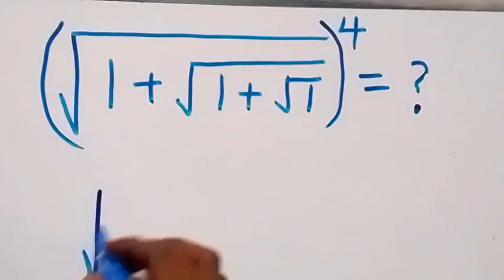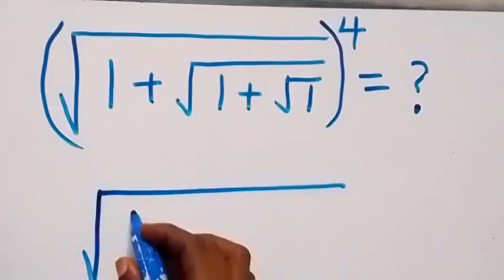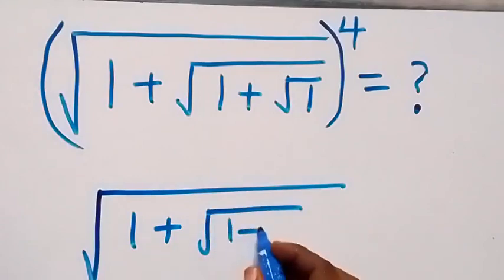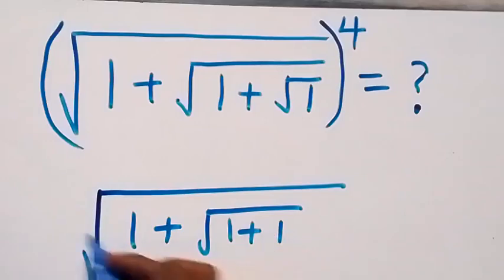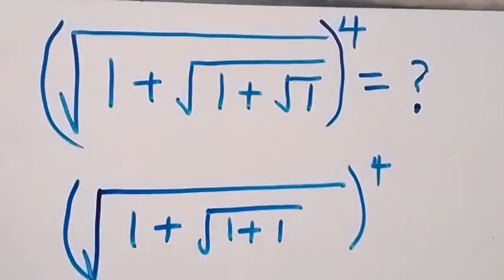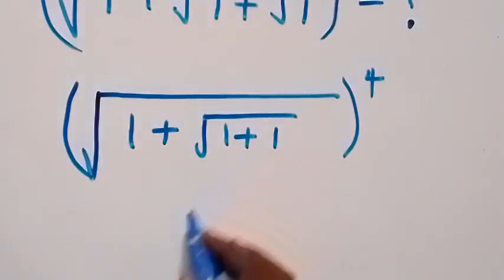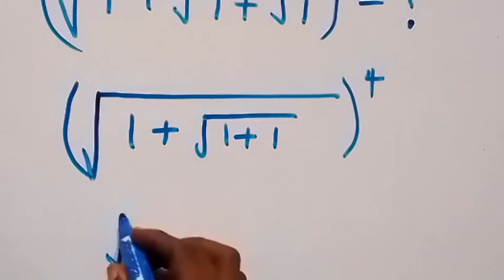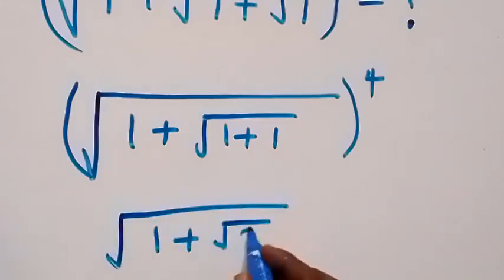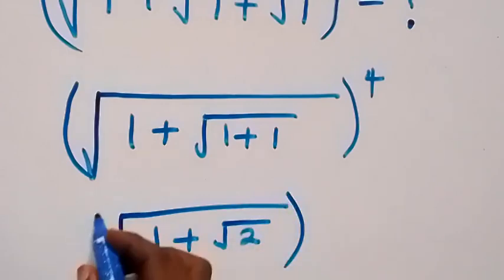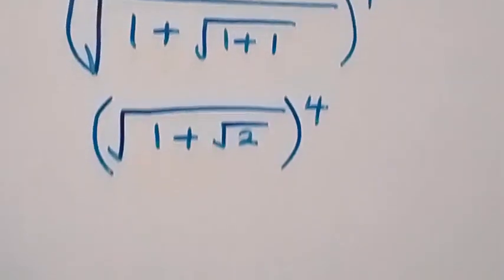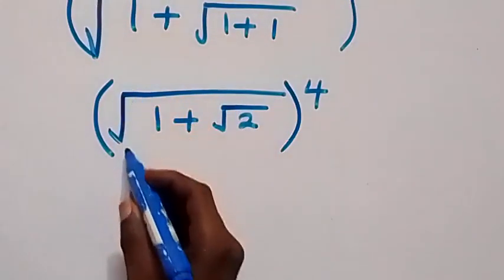We can write this as square root of 1 plus root of 1 plus 1, then all raised to power 4. We have 1 plus 1 here, same thing as 2, so we can say this is square root of 1 plus root 2, then all raised to power 4.